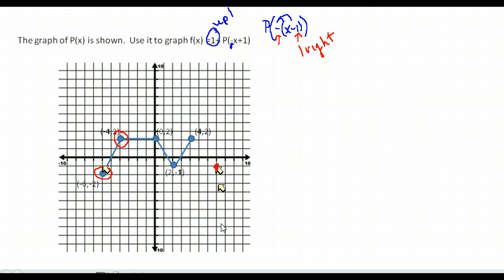Next point, negative 4, 2: multiply x by negative 1 to flip it to the right side of the graph, getting positive 4, then move 1 to the right to get 5. Move y up 1 from 2 to 3. So we end up at 5, 3. Next point is 0, 2: multiply x by negative — but 0 times negative 1 is still 0 — move 1 to the right puts us at 1, then move y up 1 to get 3. So we end up at 1, 3.